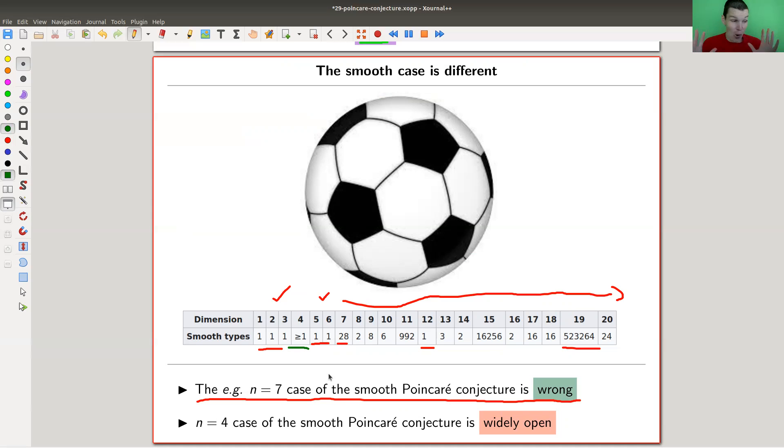Here it just says there's at least one smooth type - that's kind of obvious, it's the standard one - but there might be infinitely many, or God knows. Actually God knows, probably.